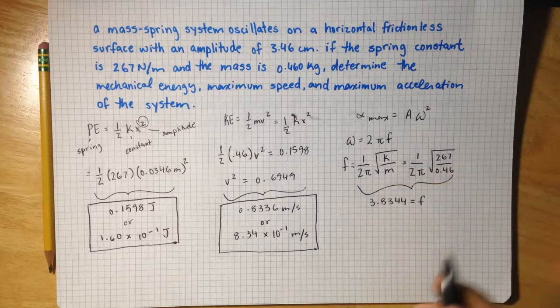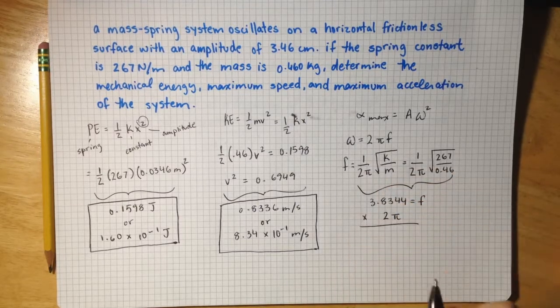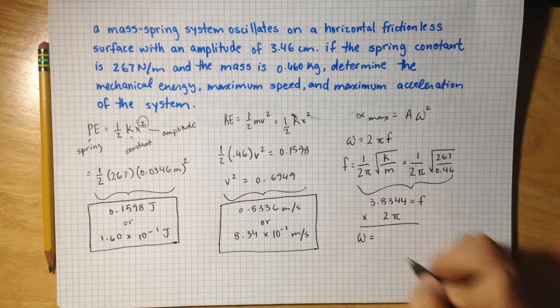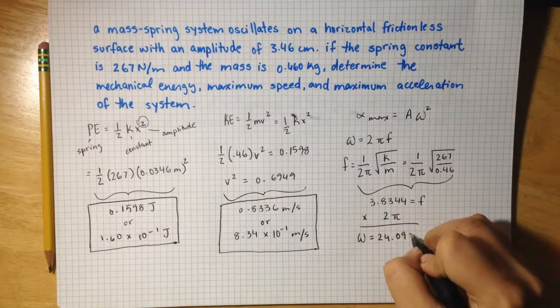To convert this into the angular frequency, we have to multiply this by 2 pi. We get the angular frequency to equal 24.0922.